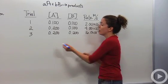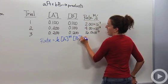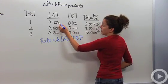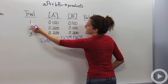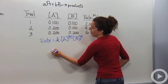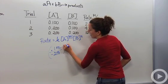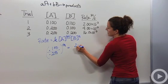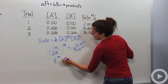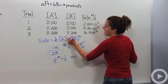The rate law is: rate = K[A]^M[B]^N. These exponents tell us how much each reactant influences the rate. To find M, I take the ratio of trials 1 and 2 because B is the same — B is unaffected. Doubling A from 0.100 to 0.200, the rate went from 2 × 10⁻³ to 4 × 10⁻³, so (1/2)^M = 1/2, which means M equals one.